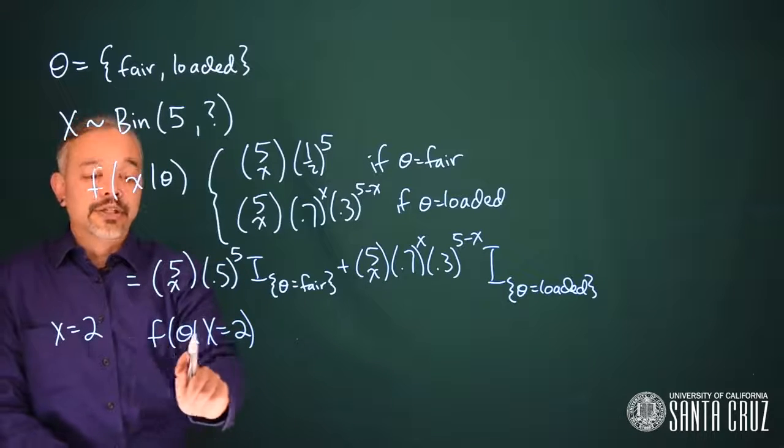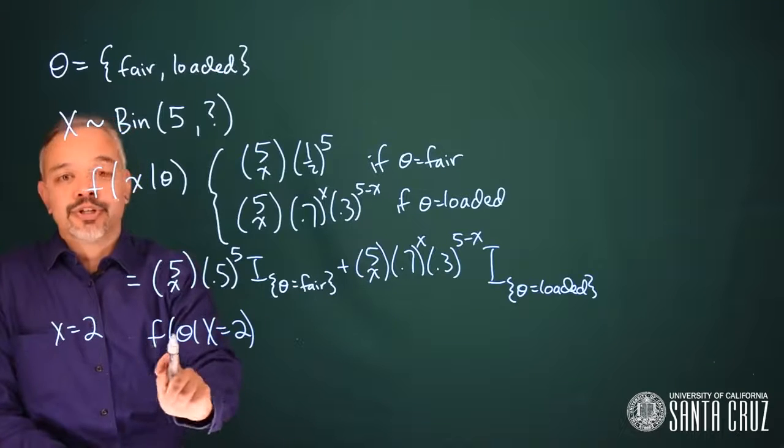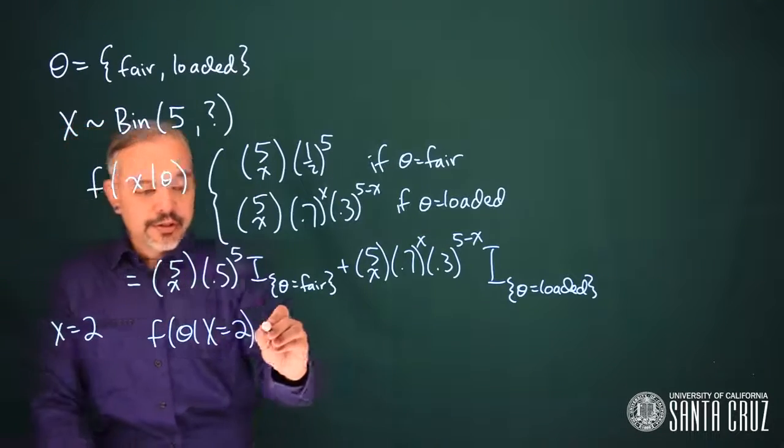On the frequentist paradigm, we're typically using capital Ls. As we move over to the Bayesian paradigm, we're just going to use f's everywhere. It's really just a notational thing.